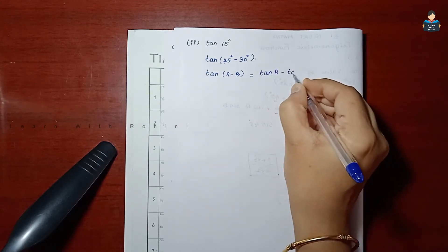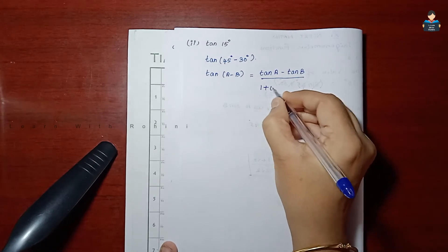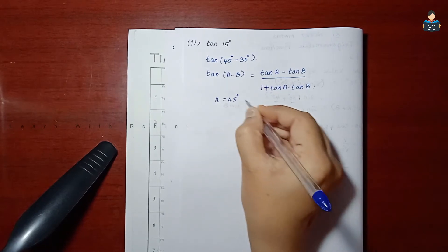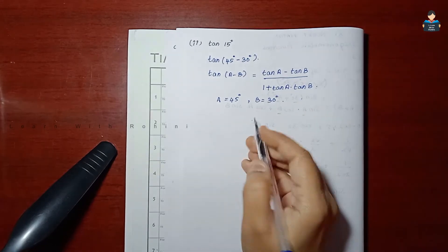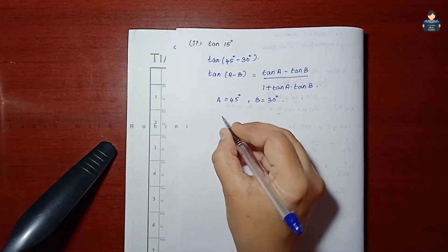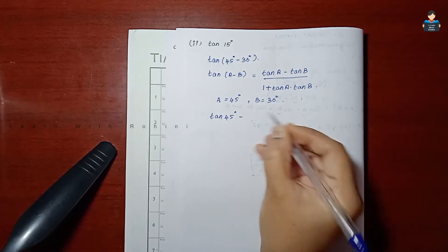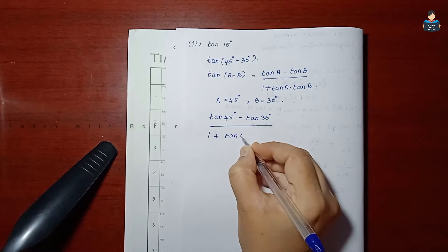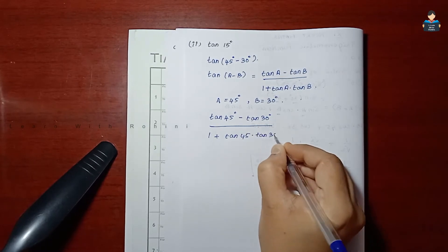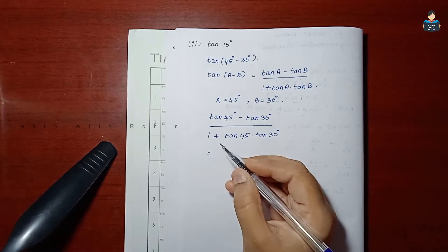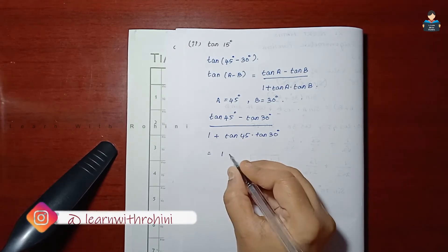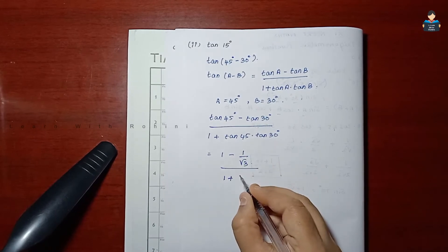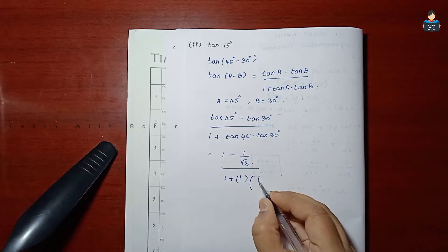Now we apply the tan(A minus B) format. The formula is: tan A minus tan B by 1 plus tan A tan B. Here A is 45 degrees and B is 30 degrees. So we substitute: tan 45 minus tan 30, which is 1 minus 1 by root 3, by 1 plus tan 45 into tan 30, which is 1 into 1 by root 3.